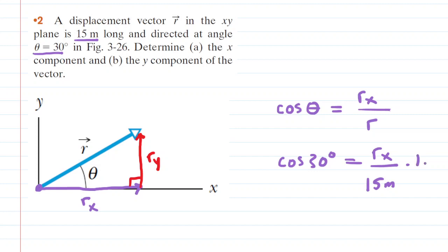Multiply both sides of the equation by 15 meters so that we can cancel on the right hand side. Pick up your calculator, make sure you're in degree mode, and 15 times the cosine of 30 is approximately 13. This is the answer for the x component, 13 meters.